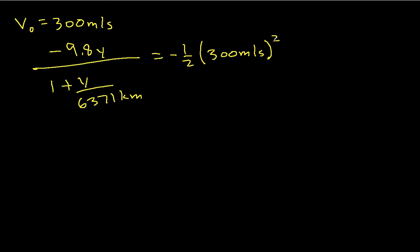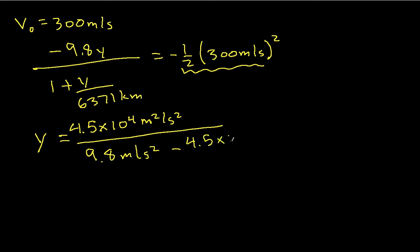Okay, and now I can work through all the algebra to solve this. I work out this number, then multiply both sides of the equation by this, which gets it over here, and then do some manipulation and solve for y. When I do that manipulation and solve for y, I get y is 4.5 times 10 to the 4th meters squared per second squared. That's basically this value here divided by 9.8 meters per second squared minus this 4.5 times 10 to the 4th meters squared per second squared over 6371 kilometers.